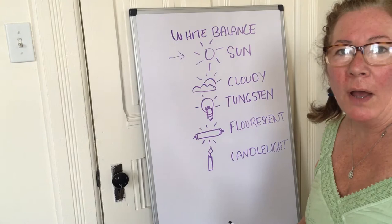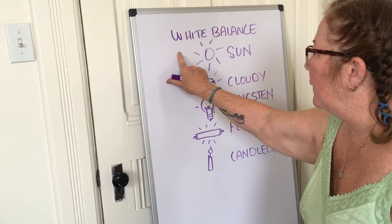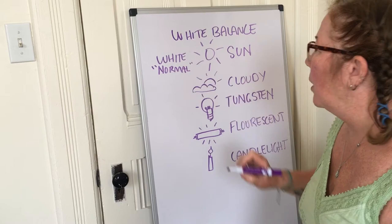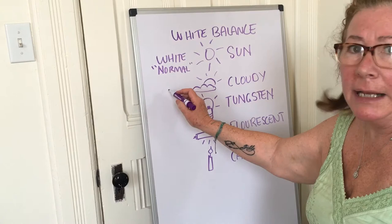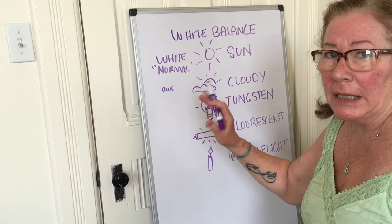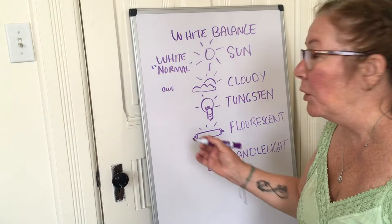White balance is very important if you want the color in your photograph to come out properly. Different light sources give you different colors. The Sun is the perfect light source because it's totally white light — what we consider normal to our eyes. With cloudy settings, the light might be slightly more blue because it's bouncing around in the atmosphere and clouds. Where it really matters is with indoor lights — tungsten, fluorescent, and candlelight. Tungsten light tends to be more yellow, so a yellowish photograph is likely from tungsten lighting.